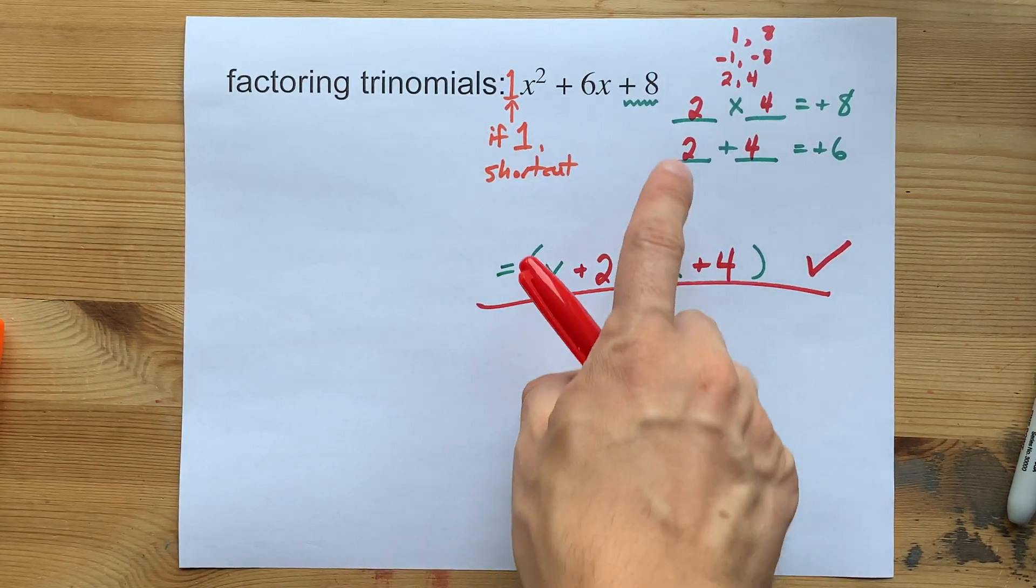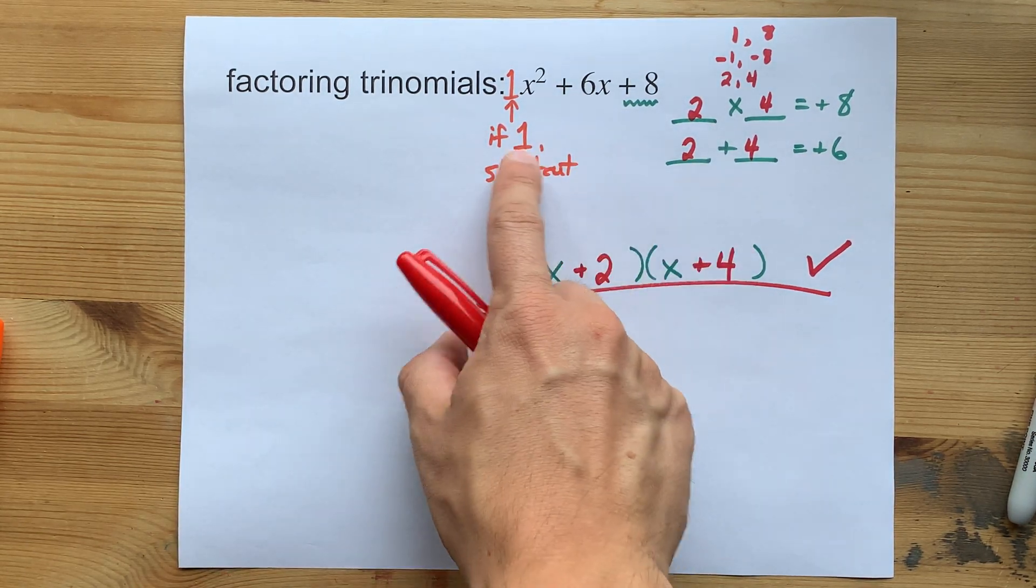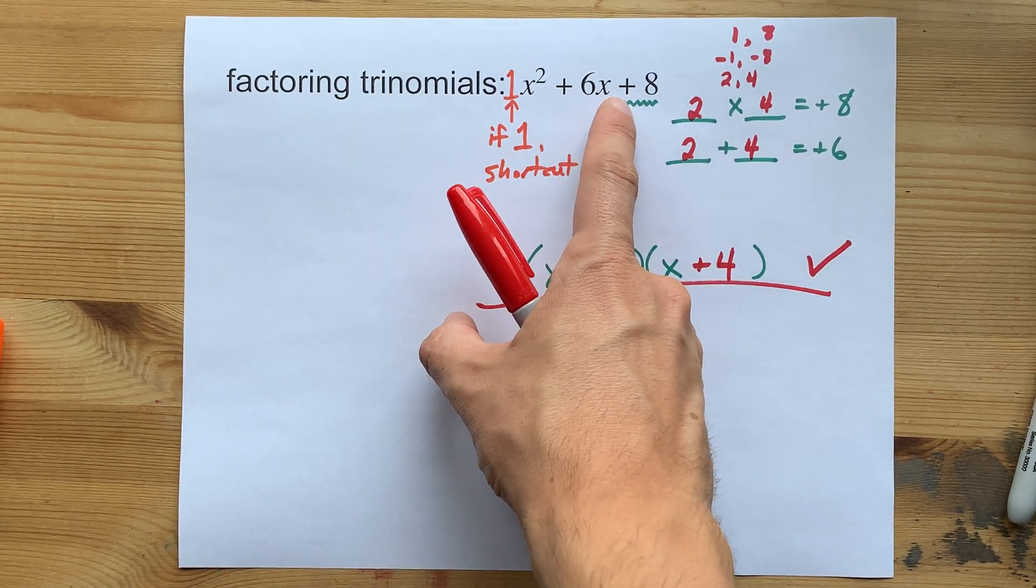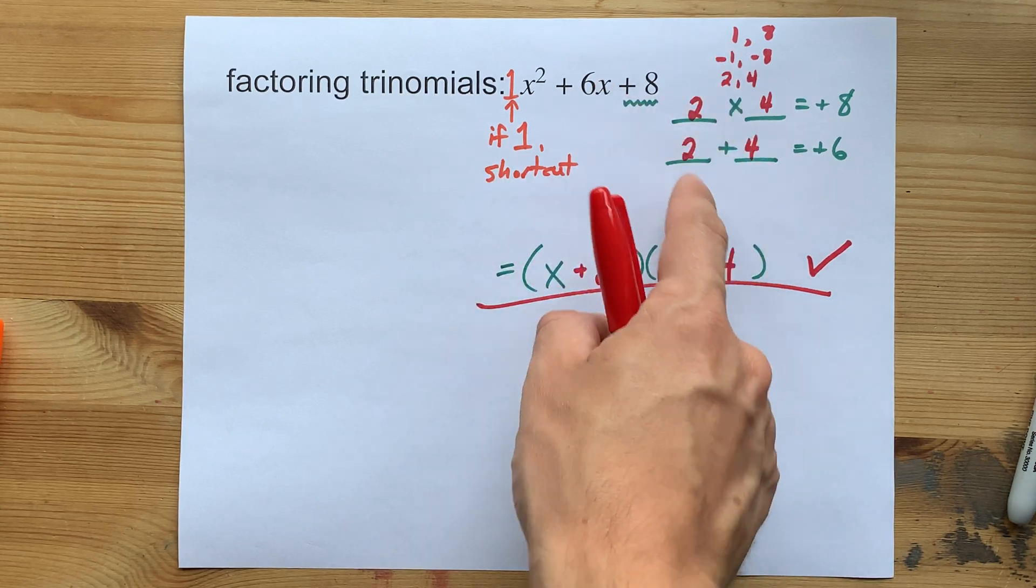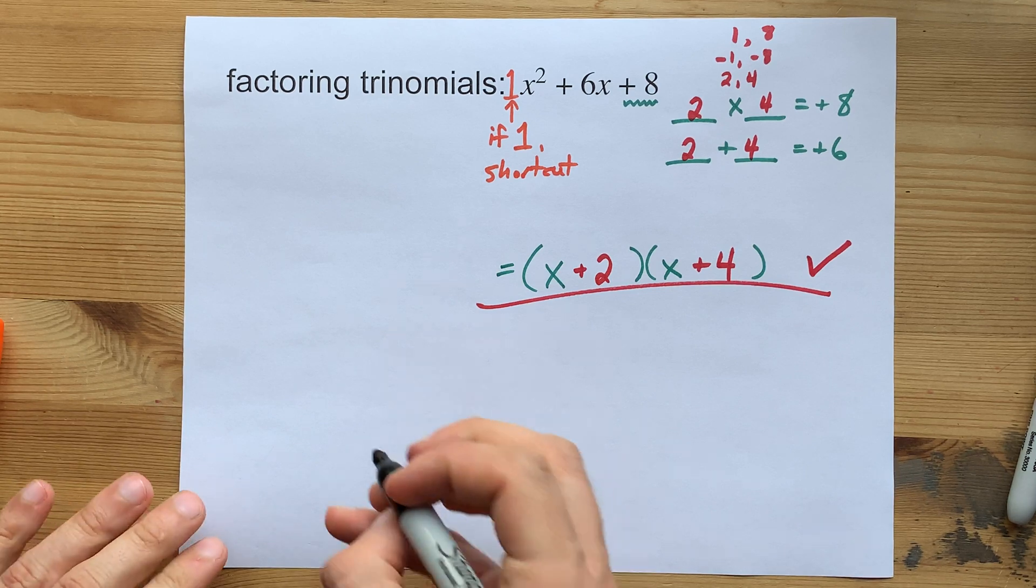You're looking for the two numbers that multiply to the third one and add to the second one. If either of these had been minus, I would have had to worry about the negatives. Would you like to see a quick example of that before I sign off?